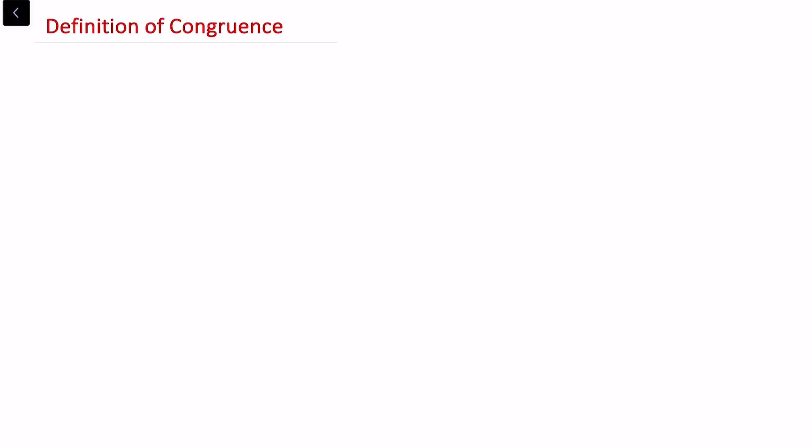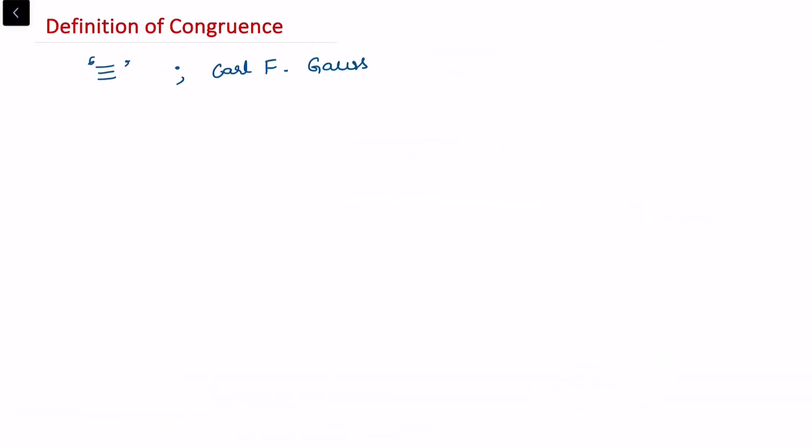In this video I'll be talking about congruences. Congruence is a symbol denoted by ≡ and it was introduced by Karl Friedrich Gauss. The study of congruences is also known as the study of arithmetic of remainders, and it gives another approach to studying divisibility problems.